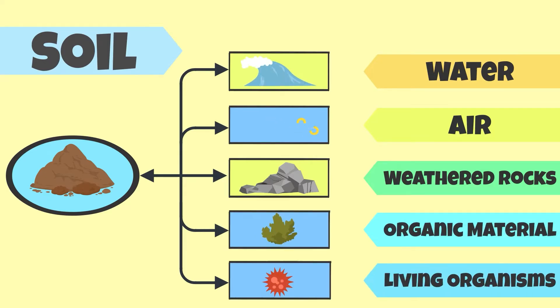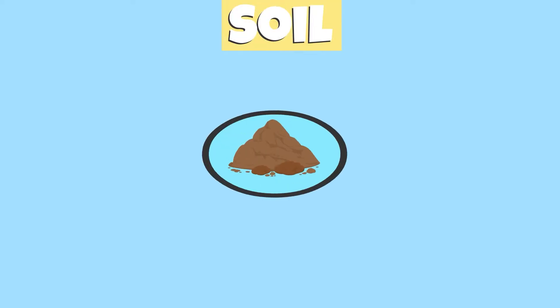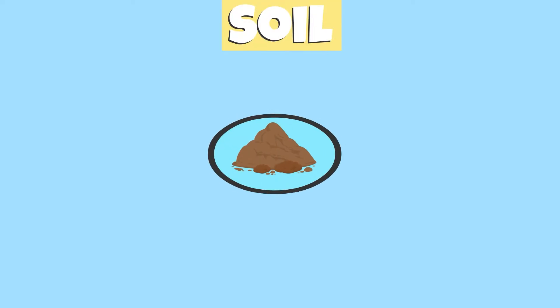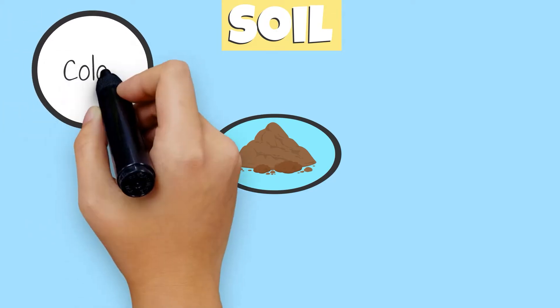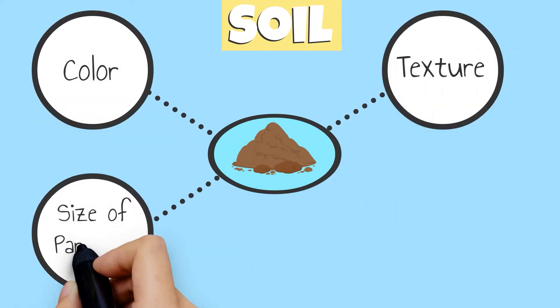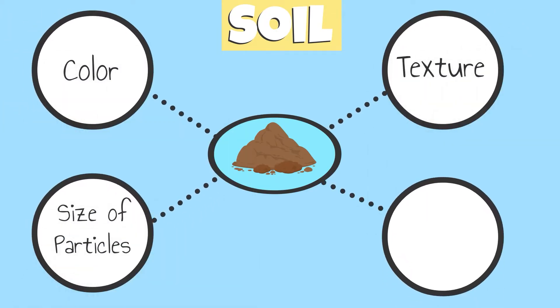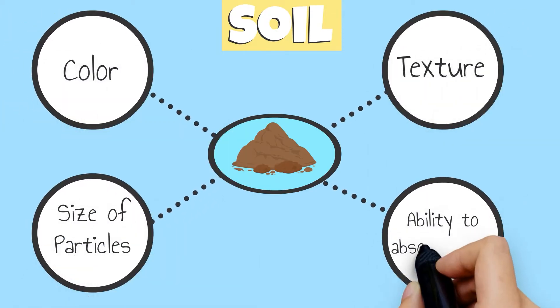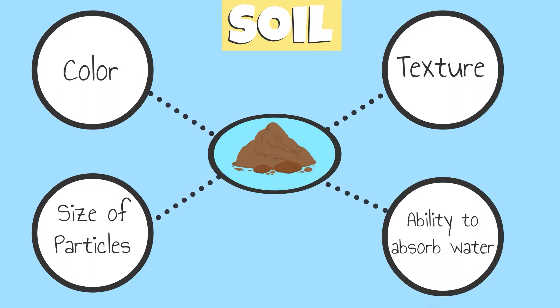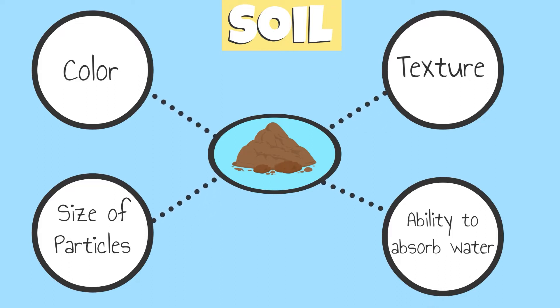We classify soil according to its color, texture, the size of its particles, and the ability it has to absorb water and support plant growth.